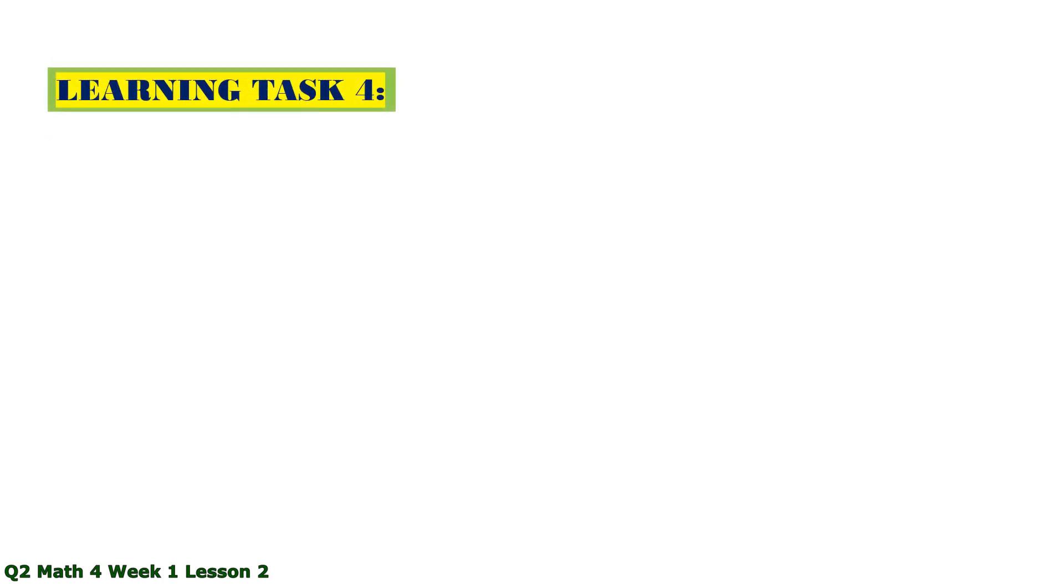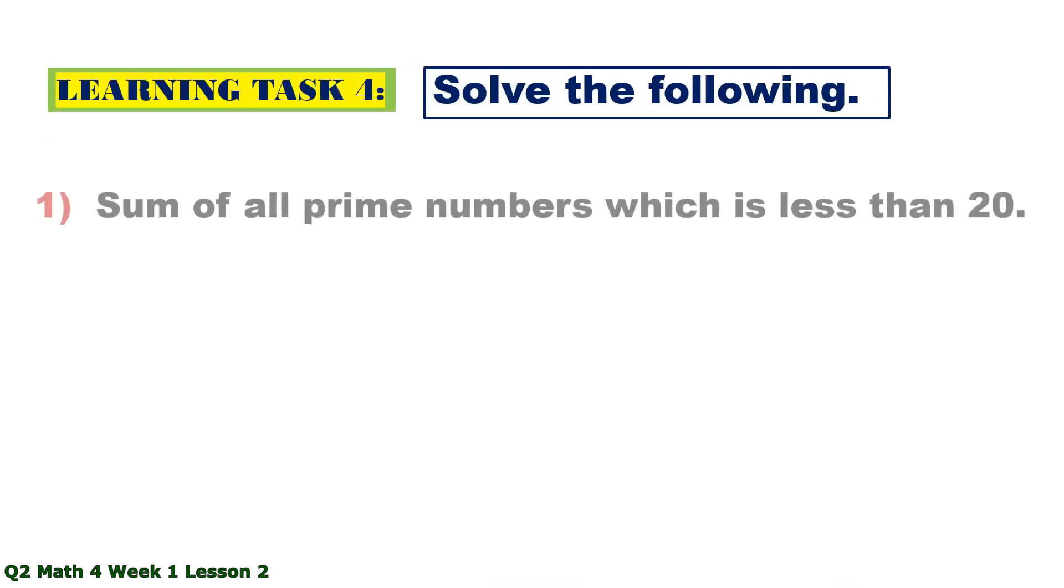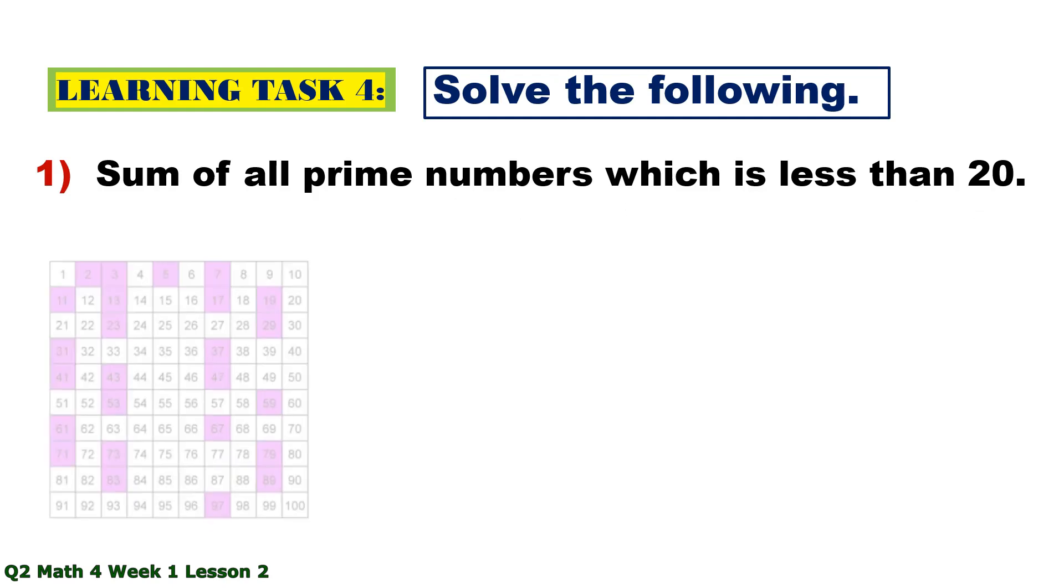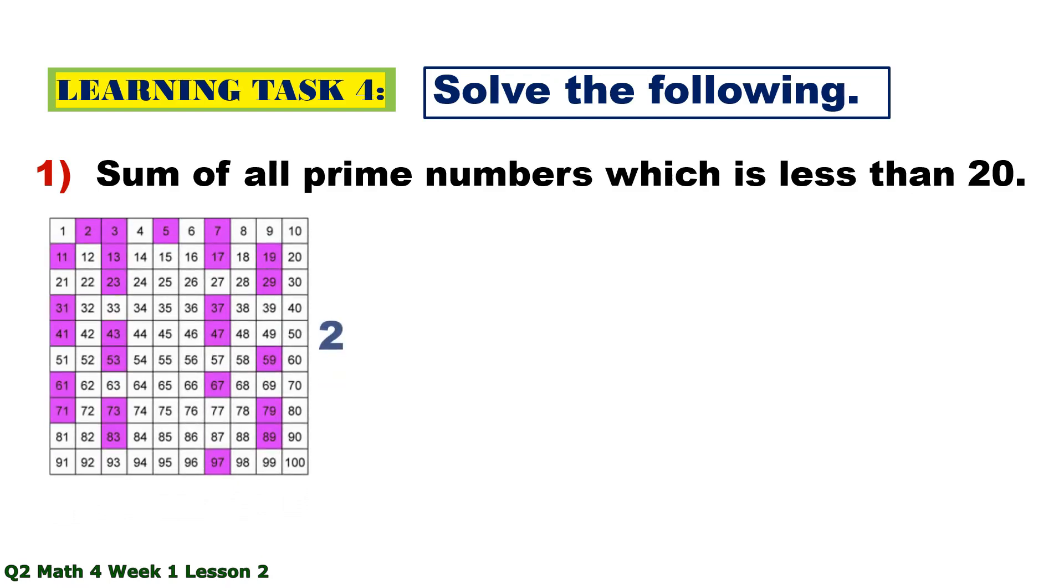Learning task 4. Solve the following. Number 1. Sum of all prime numbers which is less than 20. So those are 2, 3, 5, 7, 11, 13, 17, and 19. And the sum is 77.